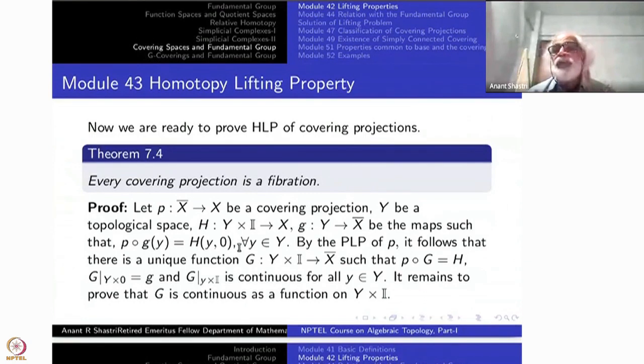This is the homotopy lifting data, if you recall. If we have homotopy lifting property, what we have to prove is that you must find a function G from Y cross I to X bar, continuous function such that p composite G is H and this G of Y times 0 must be this little g. That's what we have to find.